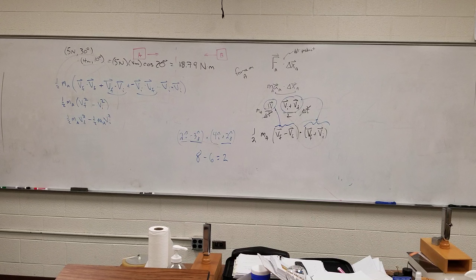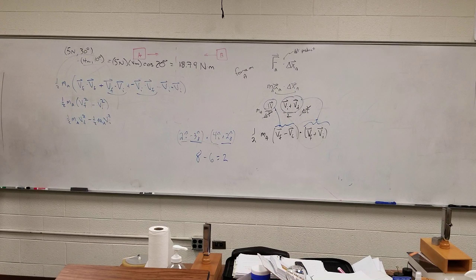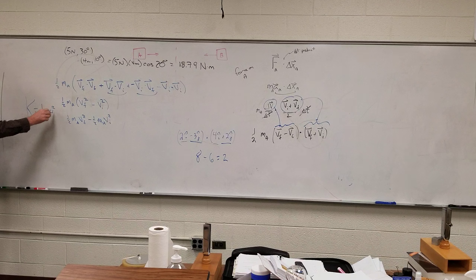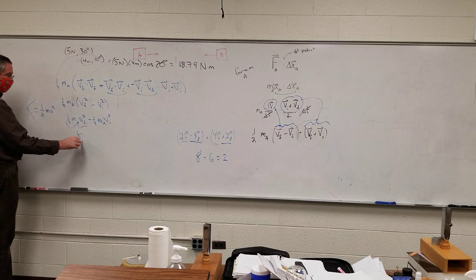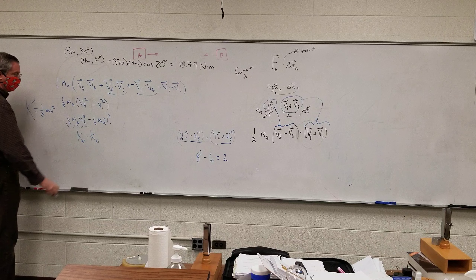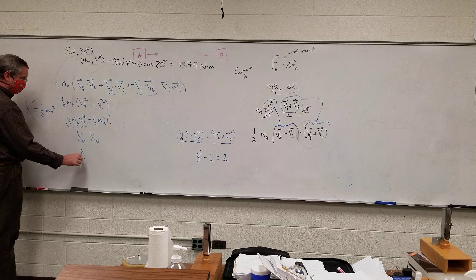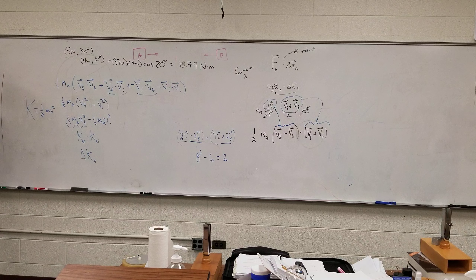Most of you are probably thinking internally, 'oh man, that's just incredible.' We can take it one step further. Physicists don't like writing one-half mv squared repeatedly, so they said, let's just use a single letter — how about a capital K? So this right here just becomes K-final of A minus K-A-initial, and that's just the change in K.